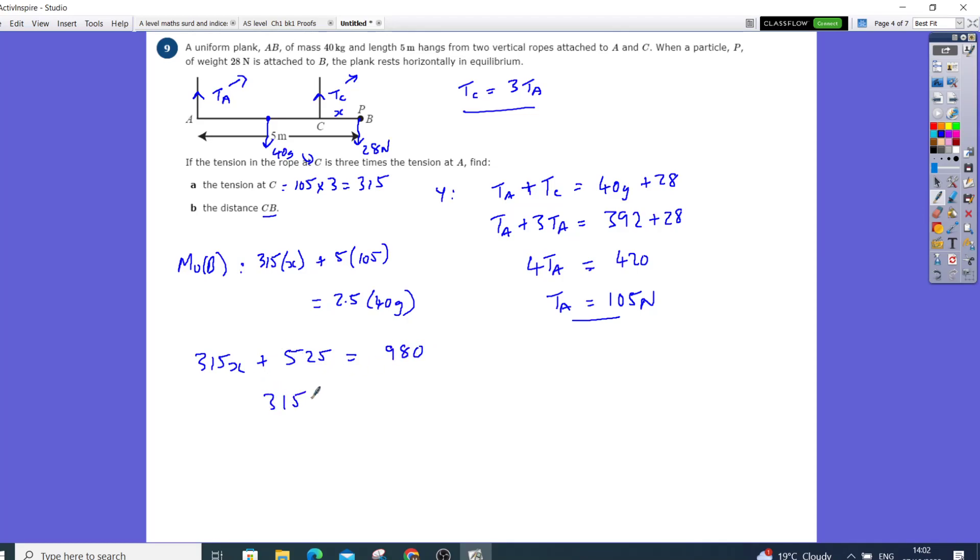So 315x is going to equal - take away the 525, it's going to give me 455. I'm going to take this to the other side, and then x will equal, then I divide it through, 455 divided by 315, and that is going to give me 1.44 recurring meters to three significant figures.